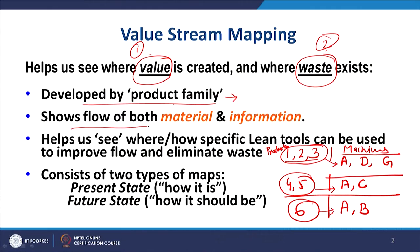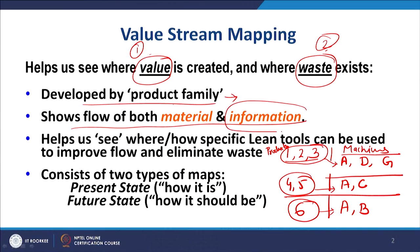Another important thing: value stream mapping is not only showing you the flow of WIP and the flow of material from raw material through various stages of the process, but it is also showing you the flow of information. Both the flow of information and the flow of material are included in your value stream mapping.